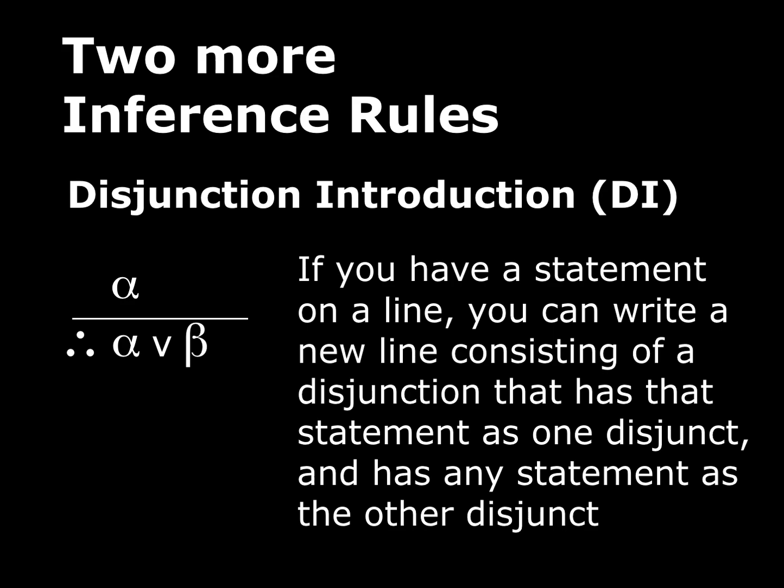Next rule: disjunction introduction. This rule says that if you have a statement on a line — and I want to emphasize something here — you're pretty much always going to have a statement on a line, because remember these can be atomic or compound. Now in chapter 4 and in the chapter 3 optional material, we'll talk about statements where you actually start a proof with no premises.